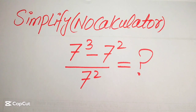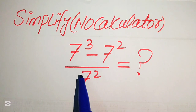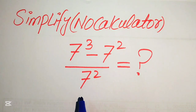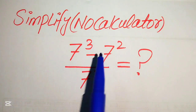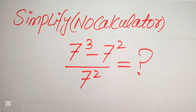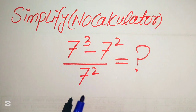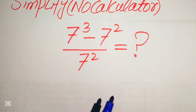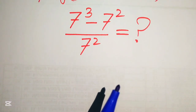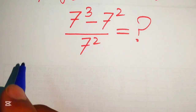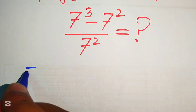Hello everyone. How to simplify this nice algebraic expression: 7 cubed minus 7 squared, divided by 7 squared. Calculator is not allowed in this problem, so we simplify this algebraic expression into the lowest form without using a calculator. This means we show all of the working on paper.